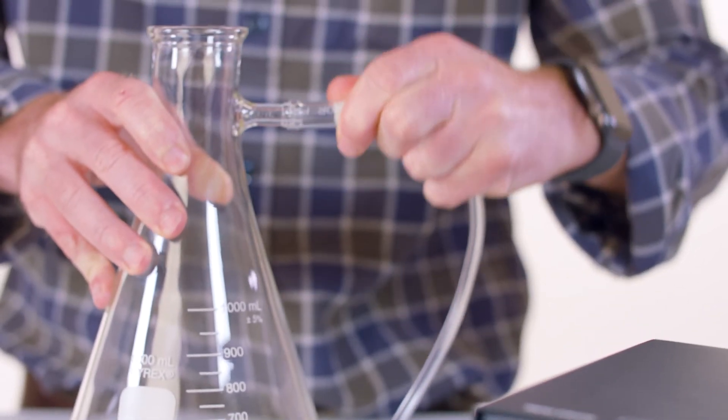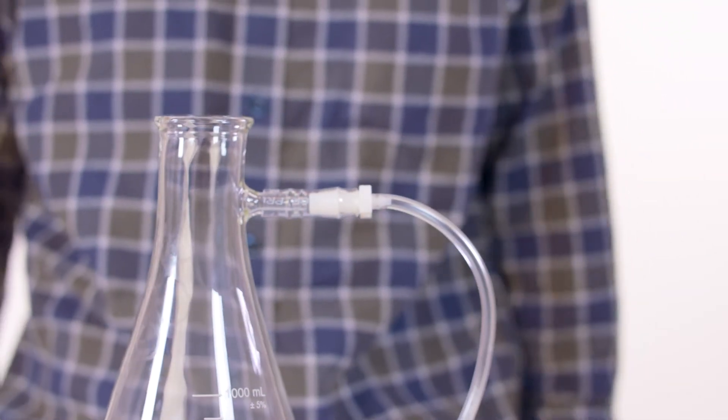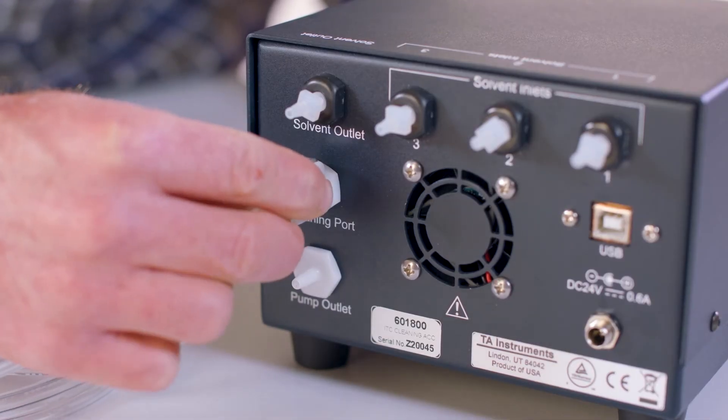Next, we want to attach a vacuum tubing to the sidearm of the Erlenmeyer flask and cleaning port, which is labeled on the back of the instrument.